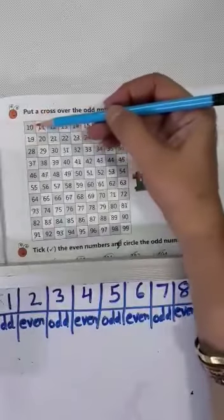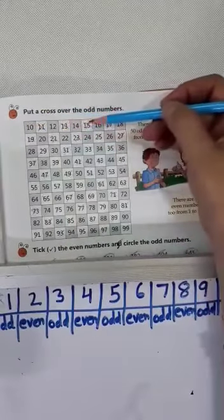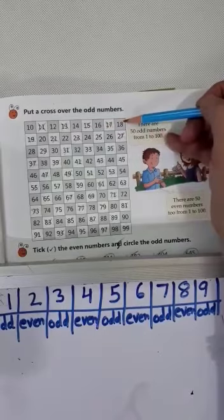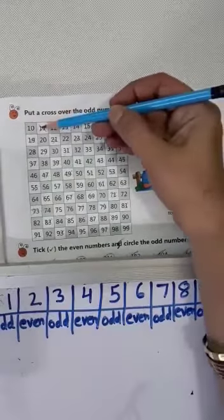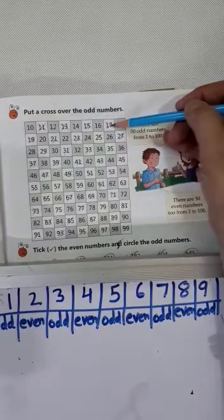Put a cross over the odd numbers. 11, 12, 13, 14, 15, 16, 17, 18. Odd number is 11, 13, 15, 17.